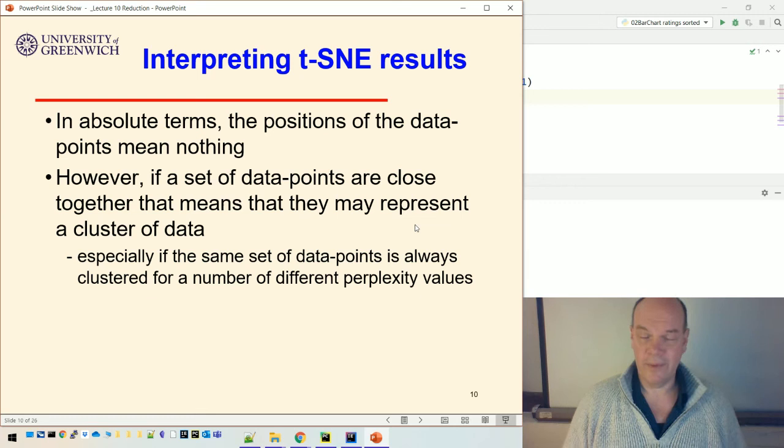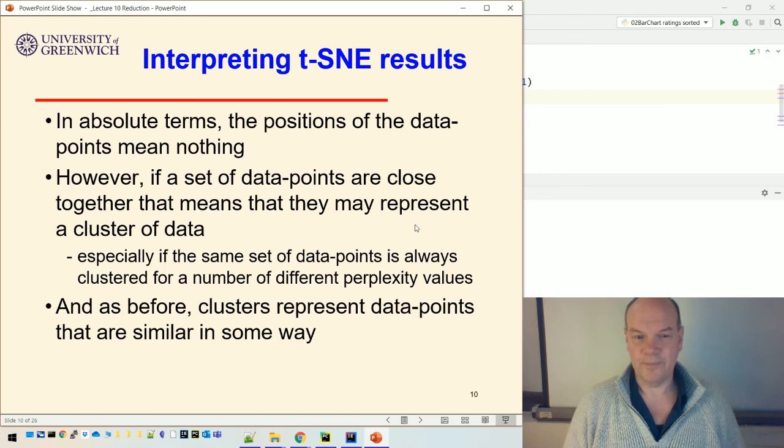And especially if we try different perplexity values and the same set of data points are clustered for all those different perplexity values, that's telling us that those things are related to each other. The data in some sense is related to each other, which has been discovered both independently by the t-SNE algorithm with different perplexities, but also possibly by the k-means algorithm.